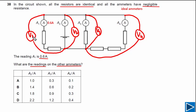Looking at V1 and V2: the top points of both voltmeters are connected by an ideal wire, so they are at the same potential. The bottom points are also a common point shared between the two voltmeters. Since we are measuring the potential difference between the same two points for both V1 and V2, we can conclude that V1 is equal to V2.